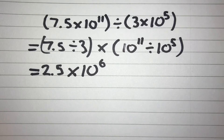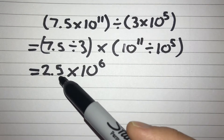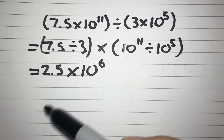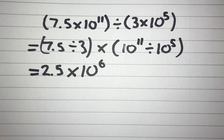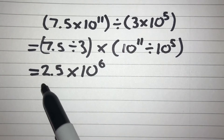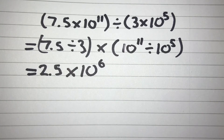Let's just double check that's in standard form. We've got a number between 1 and 10 with 2.5, so that's all good, and we've got a power of 10 that we're multiplying it by, so that's all good as well. So our answer is 2.5 times 10 to the power of 6.